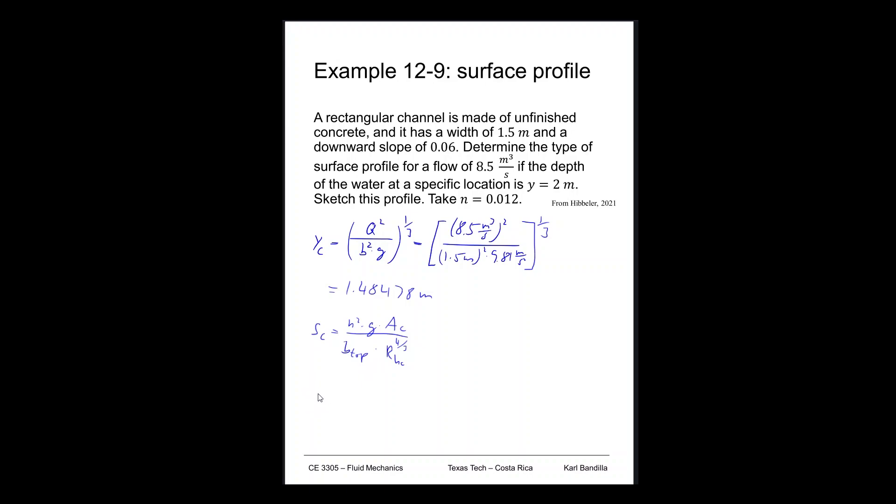Start with the critical flow area, so ac. It's a rectangular channel, so it's easy. It's just b times yc. So that'd be 1.5 meters times 1.48478 meters, so almost 1.5. So it'd be 2.22717 meters squared. That's our ac.